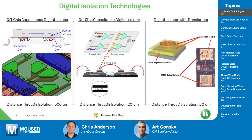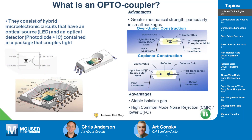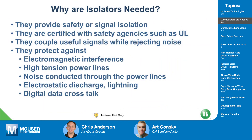We also have the OPTO — the optocoupler — which is probably one of the oldest and still used very extensively. Essentially the OPTO is a hybrid microelectronic circuit: it has an optical source, which is an LED, and an optical detector, which is a photodiode plus IC, all contained in a package that couples light. The advantage is a stable isolation gap and very high common mode noise rejection.